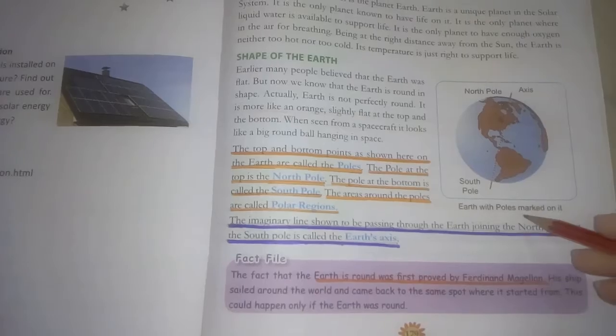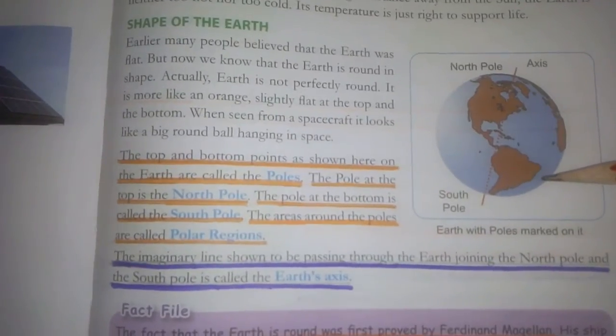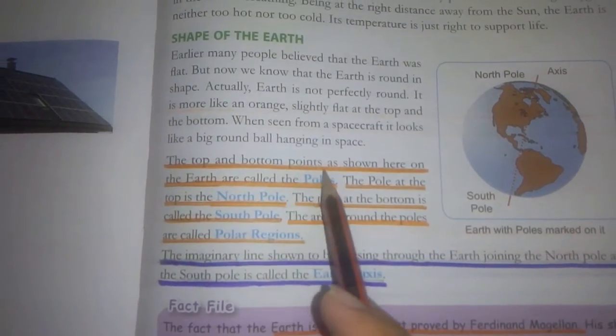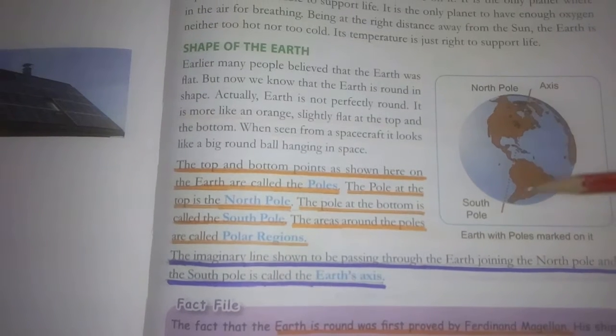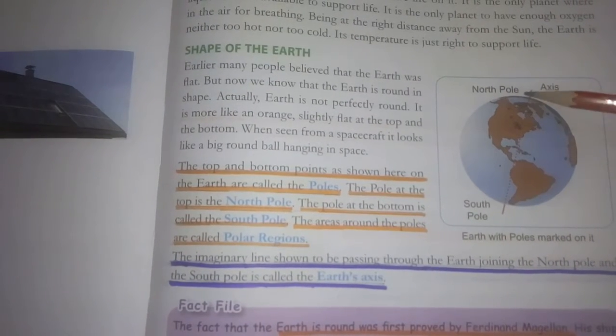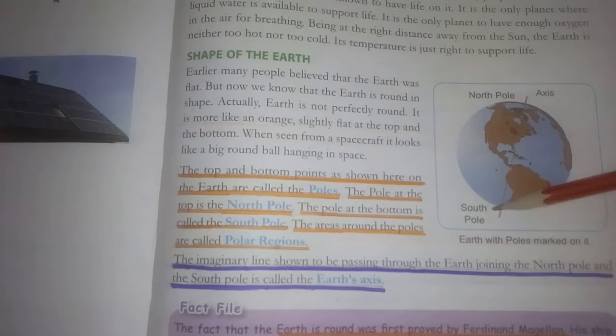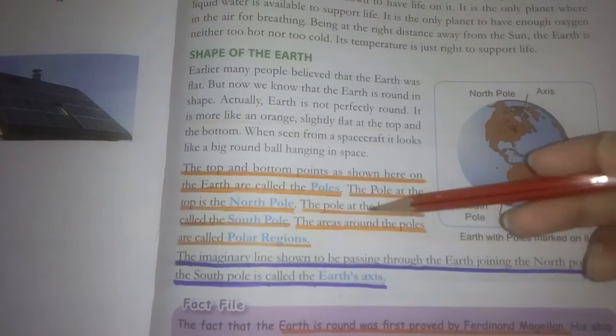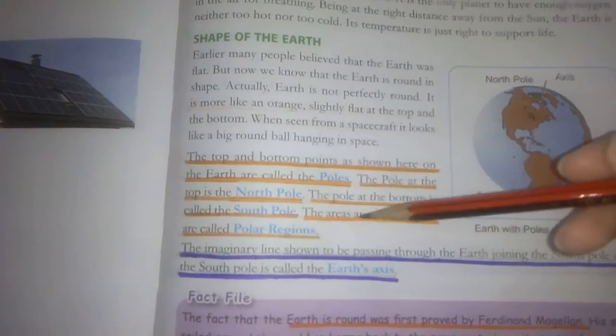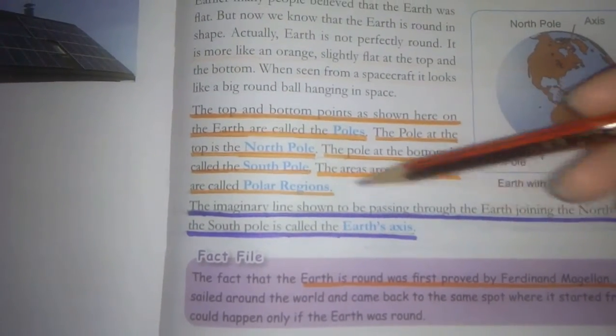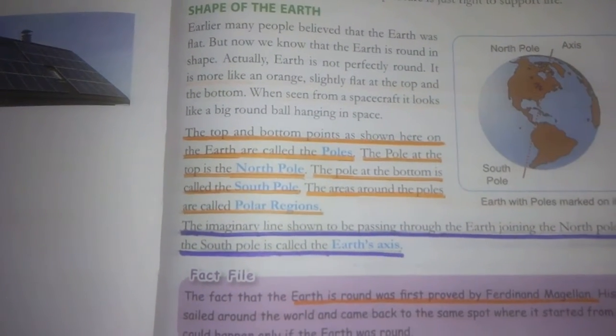Now, earth with poles marked on it. We'll learn about earth and its poles, as shown in this picture. The top and bottom points as shown here on the earth are called the poles. The pole at the top is the north pole. The pole at the bottom is called the south pole. The area around the poles are called polar regions.